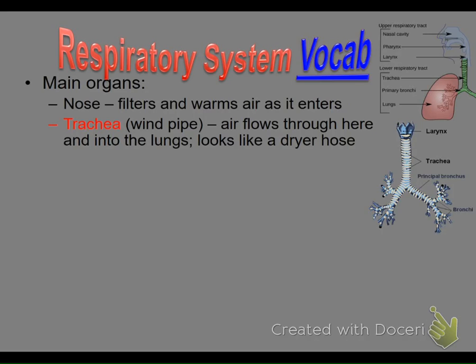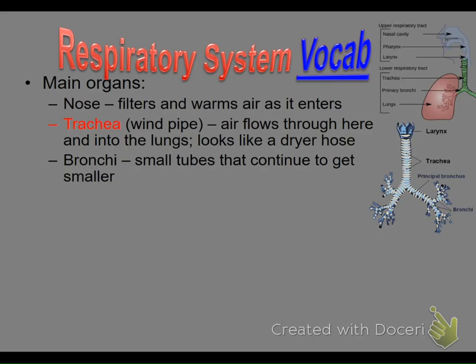So we've got the nose and the trachea. Oxygen is the goal — to get it into your blood. Getting the air through your nose, down your trachea. Bronchi — everybody say 'bronchitis.' The -itis in medical terminology means something is inflamed or infected. So bronchitis means your bronchial tube is inflamed. If you learn the prefixes and suffixes, you'll understand better what the doctor is explaining.